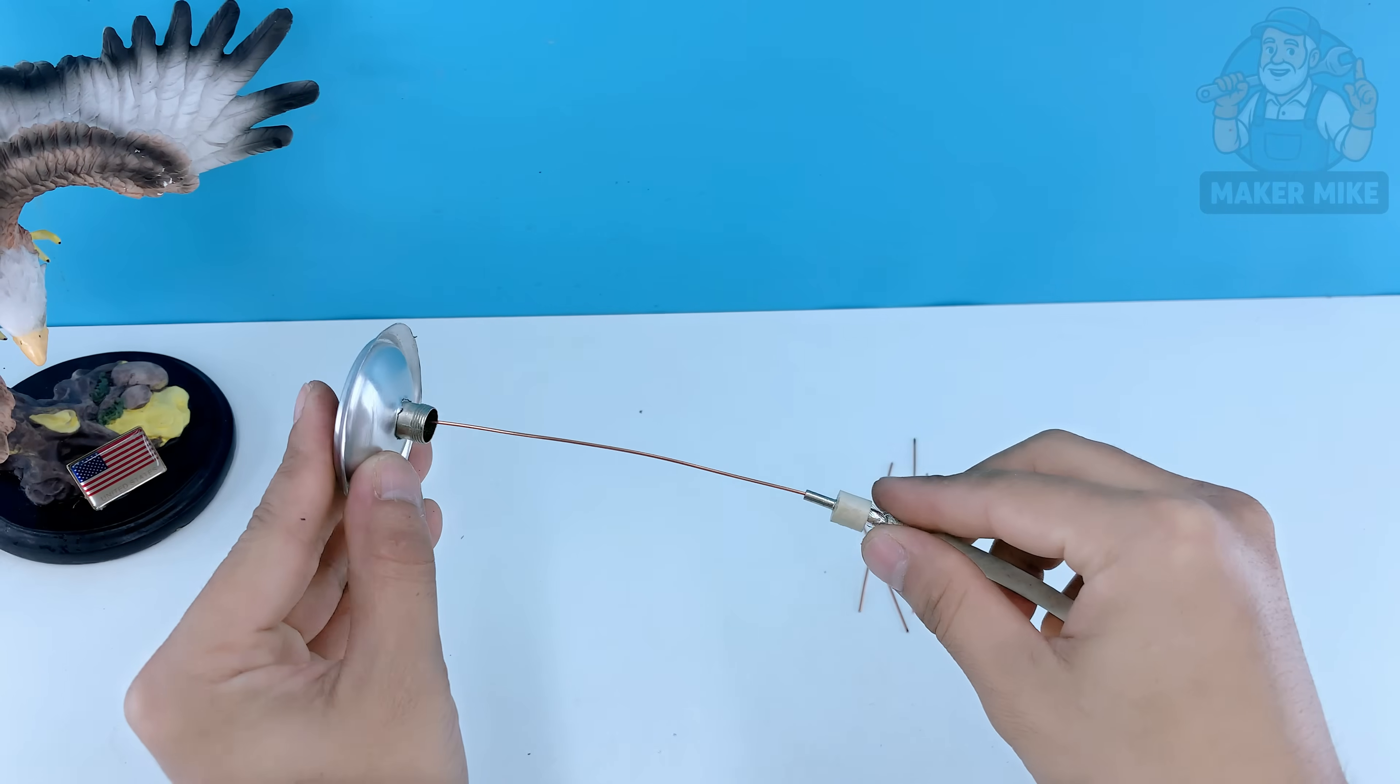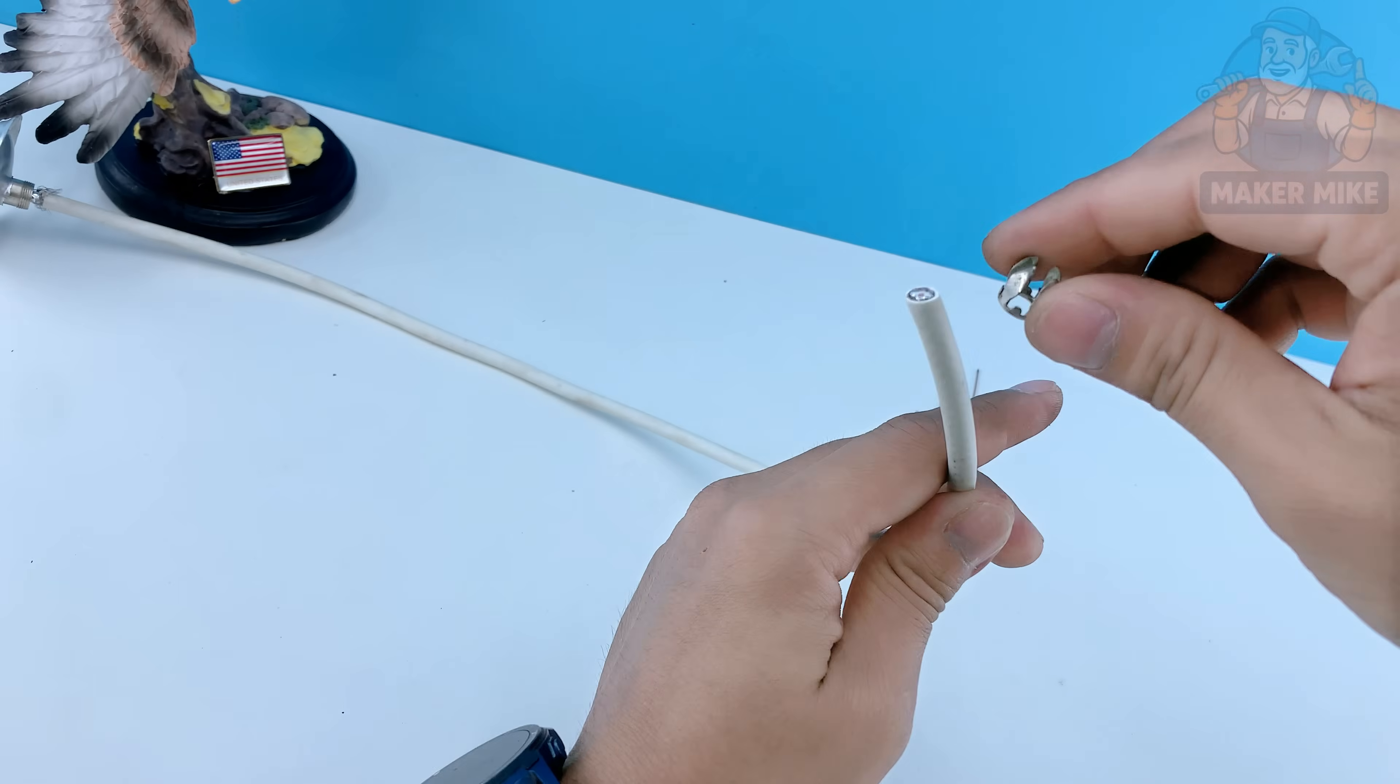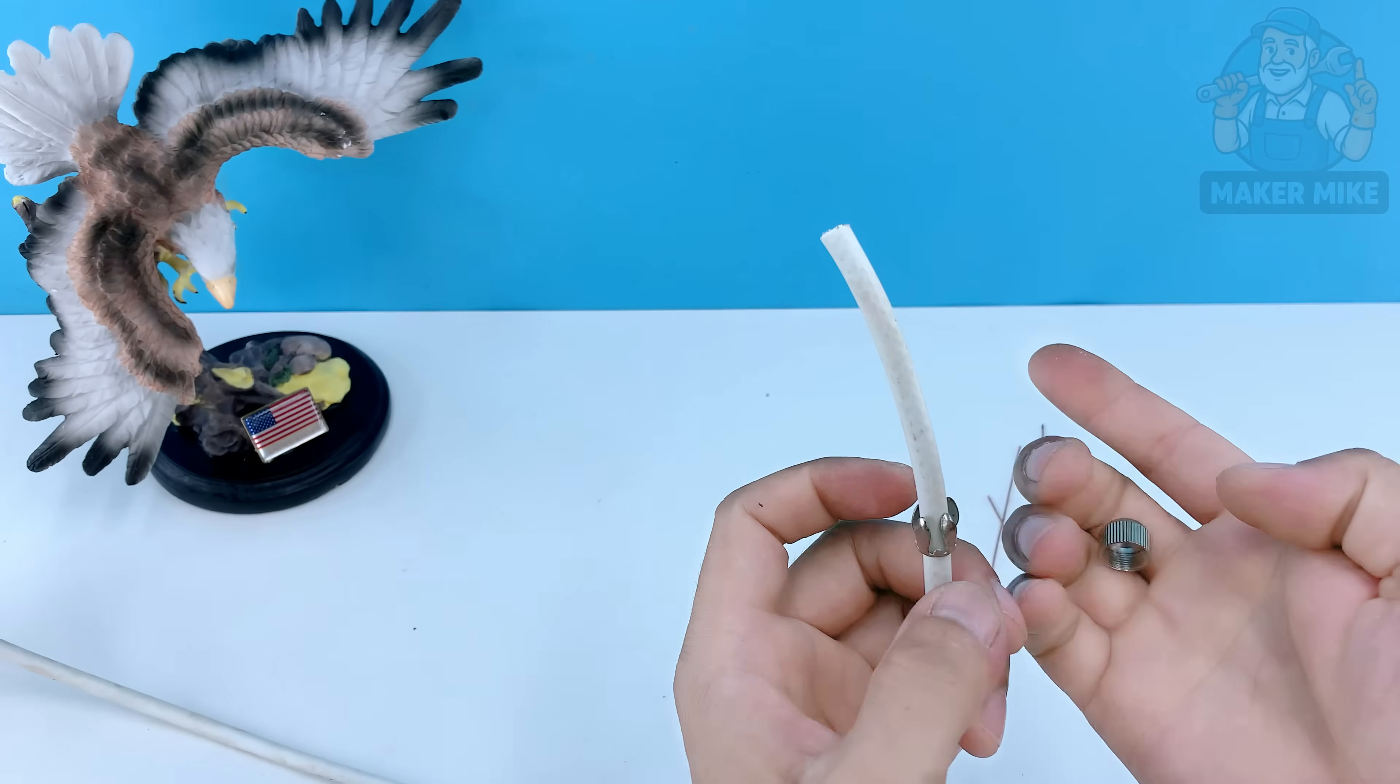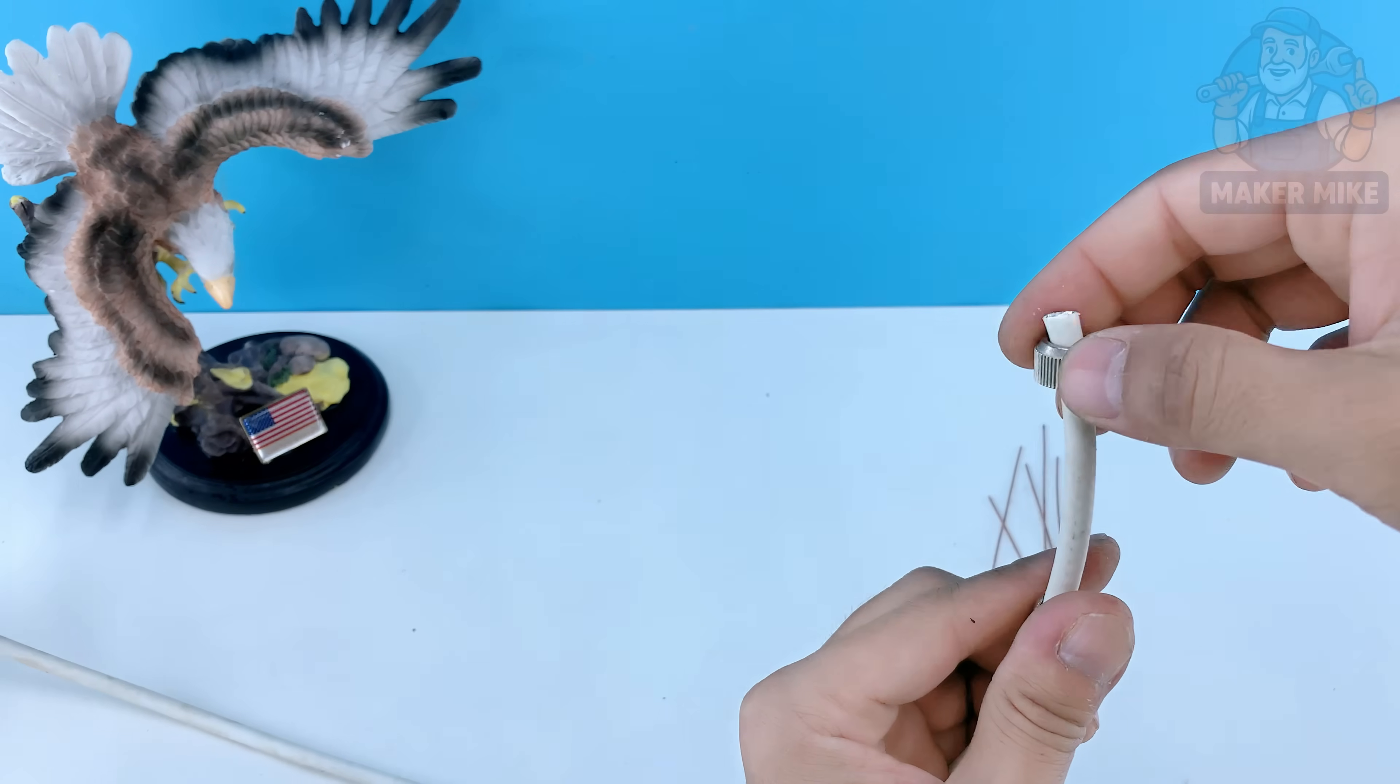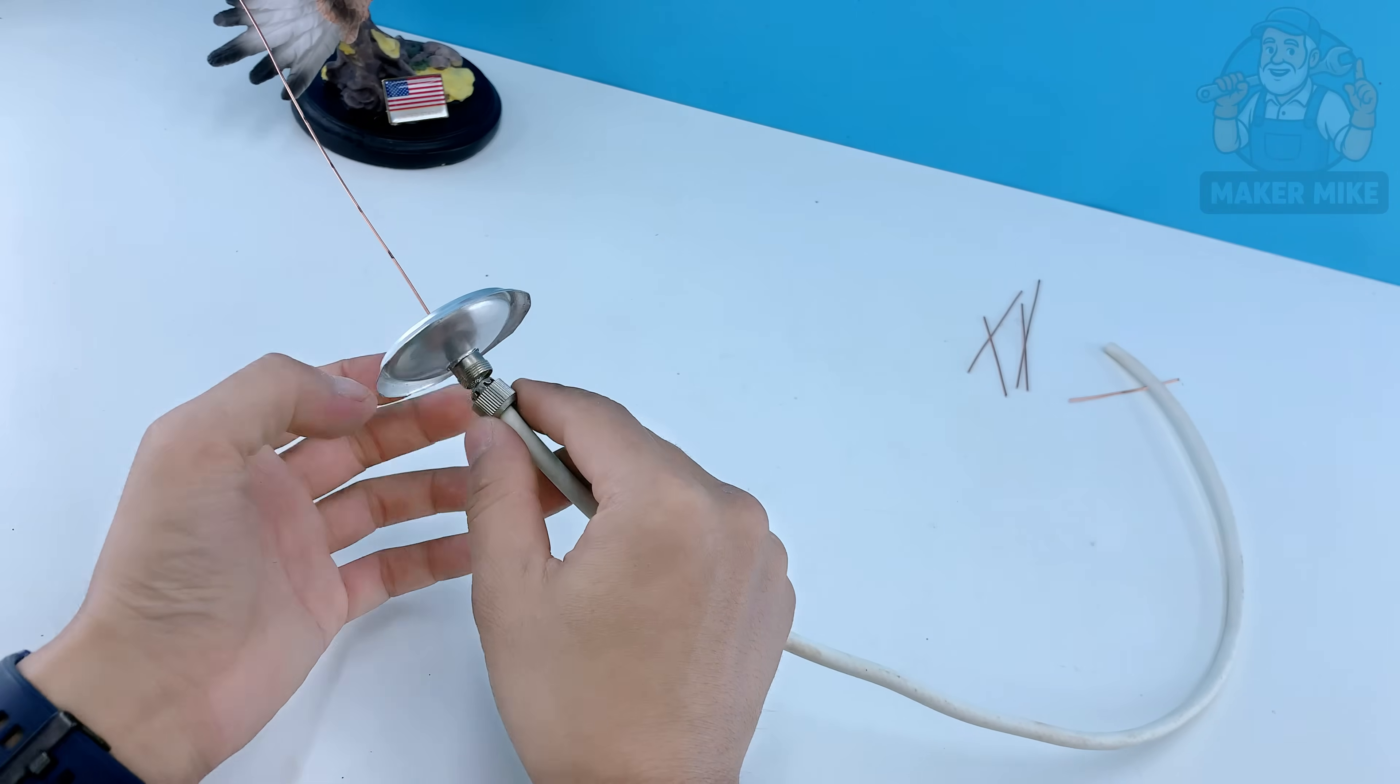Next take the F connector and screw it onto the end of your coaxial cable. Make sure it's tight, you want a solid clean connection. Then slide the cable's copper core through the hole in the can's base and secure it to the F connector. That's your antenna's main signal path, ready to power up.